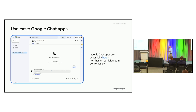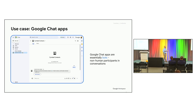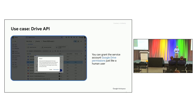When would you actually use service accounts? The first use case is Google Chat apps — they were called Chat bots, now renamed to apps, but they're really just non-human participants in conversations and they need an identity. That identity is the service account. With that service account, they're able to call the Chat APIs to post a message, respond to a slash command, or do whatever they want, authenticated as their own identity.